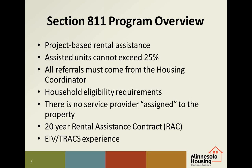A household is eligible for 811 if it has a person with a disability between the ages of 18 and 61, and is extremely low income at 30% AMI, and is currently participating in the DHS-run Money Follows the Person program, or is long-term homeless and working with a PATH outreach coordinator. As the household moves into an 811 assisted unit, the current caseworkers will help them connect to permanent support services.